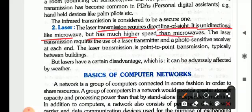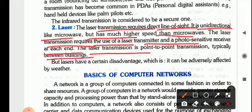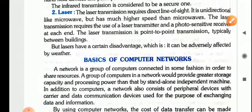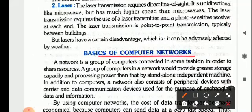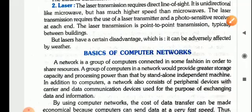Laser transmission requires direct line of sight. It is unidirectional like microwave but has much higher speed than microwave. Laser transmission requires the use of a laser transmitter and a photosensitive receiver at each end. It is point-to-point transmission typically between buildings, but laser has one disadvantage: it can be adversely affected by weather. In the next Part 4 video, we will be covering basics of computer networks. Thank you and take care.